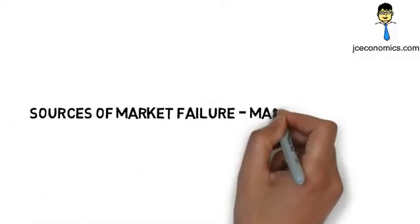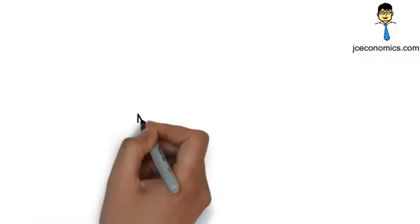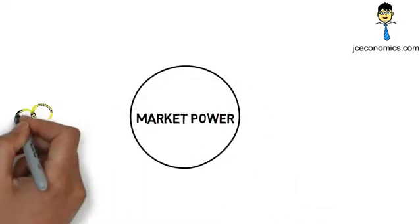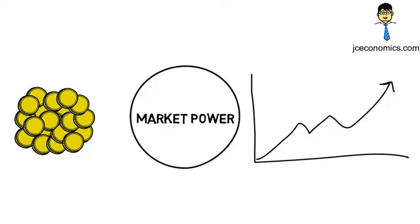Sources of Market Failure: Market Dominance. Market power, more commonly in oligopolies and monopolies, is the ability to influence the price of a product above its marginal cost.